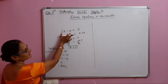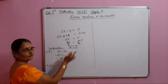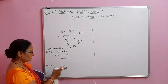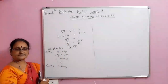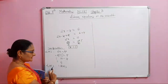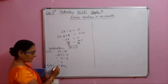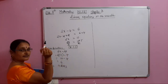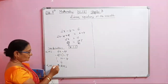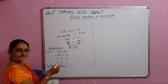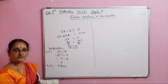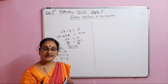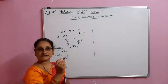We substituted x equal to 5 into the LHS and got 6, which equals the RHS. If LHS equals RHS, the value we got is correct. Sometimes we don't get this equality, which means the value may be wrong due to a calculation mistake. By verification, you can check whether the value is correct or not.